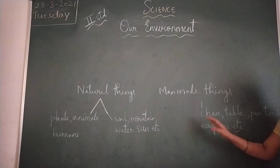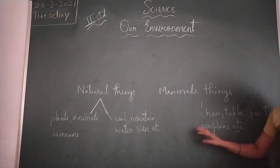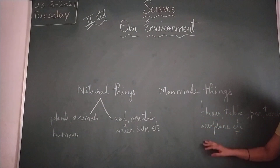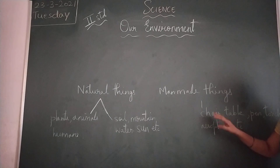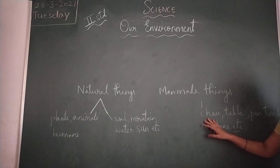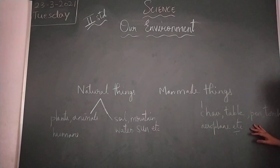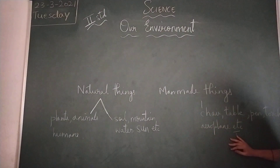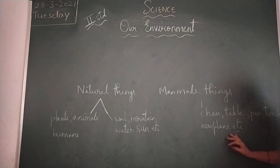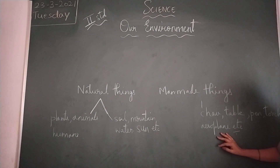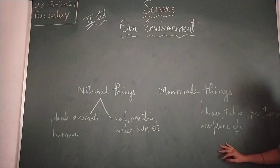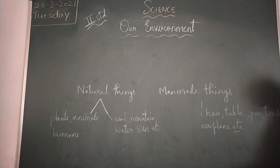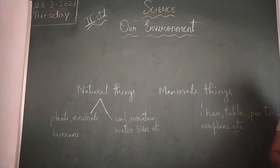Man-made things are non-living. For example, chair, table, pen, torch, aeroplane — so many are there. These things are made by man, and they are called man-made things.